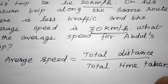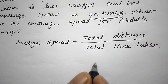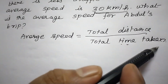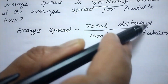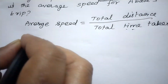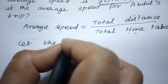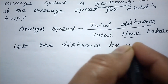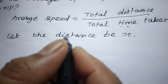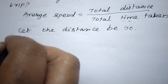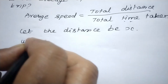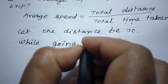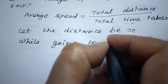Here only speed is given, so we have to find the distance and the time as well. I will let the distance equal to x. The time taken while going to school I will take as t1.